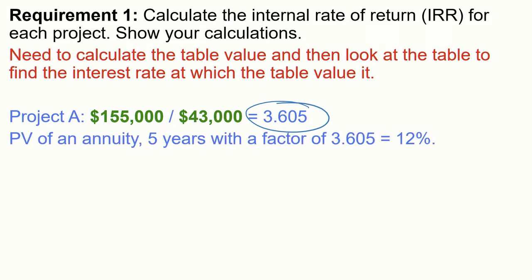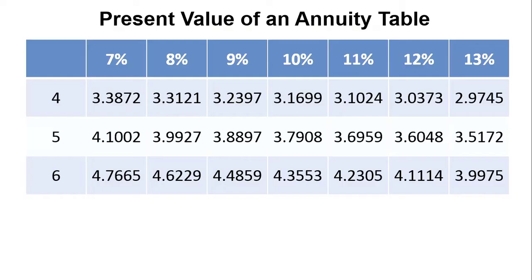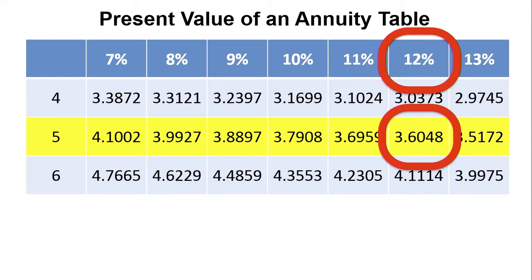Looking at the present value of an annuity table for five years, we find which interest rate has a factor closest to 3.605. The value 3.6048 is very close to 3.605, so the internal rate of return for Project A is 12%.